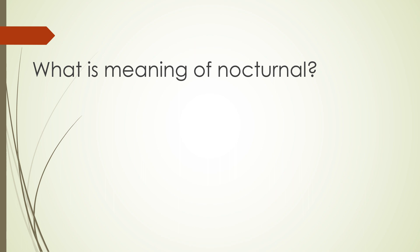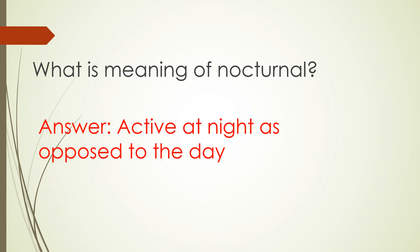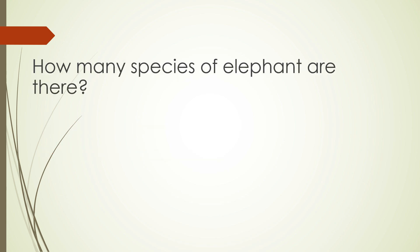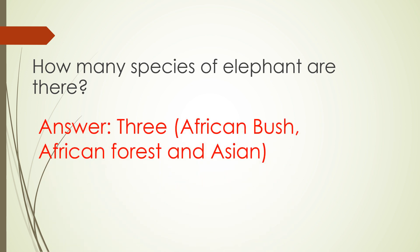What is the meaning of nocturnal? Answer: Active at night, as opposed to the day. How many species of elephant are there? Answer: 3 — African bush, African forest, and Asian.